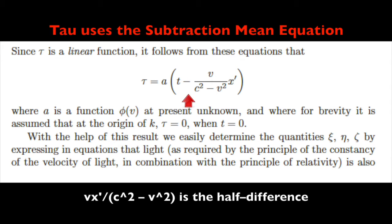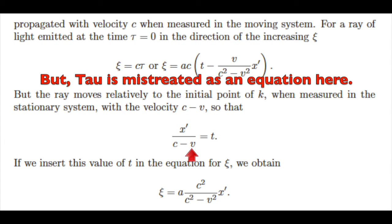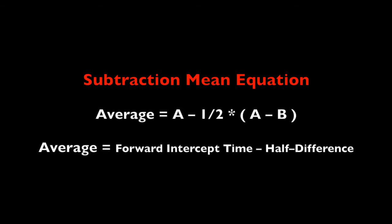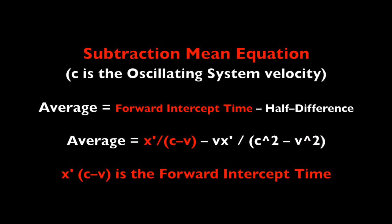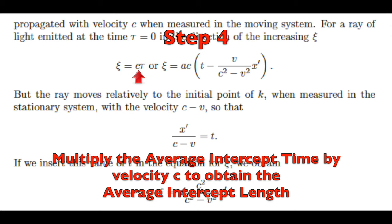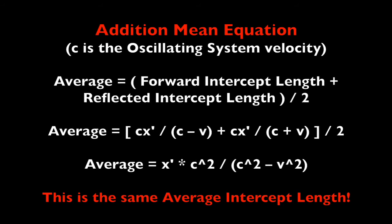Einstein fails to recognize this for three reasons. First, he uses the subtraction mean equation, which is not the common equation we use to find an average. Second, he does not properly invoke the tau function, mistreating it as an equation — specifically, he replaces the function variable t with the forward intercept time using substitution instead of properly invoking the function as he had done earlier in his paper. This is extremely subtle, and while he gets the right answer here, it will lead to the final tau equation being incorrect — a point I discuss at length in my book, Disruptive. Third, he doesn't assign the average intercept time to a variable, making it hard to see what he's doing. Step four: Einstein multiplies the average intercept time by c to get the average intercept length. We can check our work using the addition mean equation: simply add the forward and reflected intercept lengths together and divide by two — you'll get the same answer.